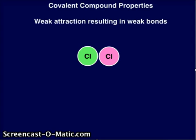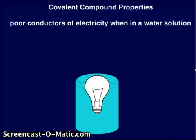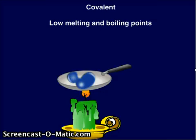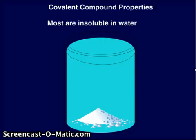Here are some properties of covalent compounds. They have a weak attraction resulting in weak bonds. They are poor conductors of electricity when in a water solution. They have low melting and boiling points, and most of them are insoluble in water.